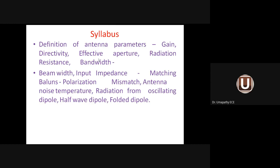Beam solid angle corresponds to the maximum portion covered in the major lobe of an antenna. In the radiation pattern, the major lobe and minor lobes are present. Minor lobes — including side lobe and back lobe — indicate losses in the antenna, while the major lobe indicates maximum radiation in a particular direction.